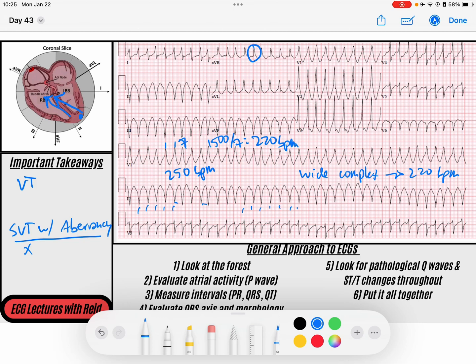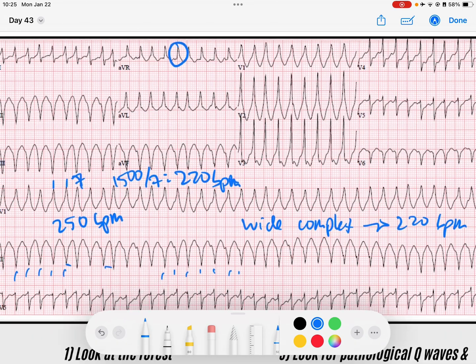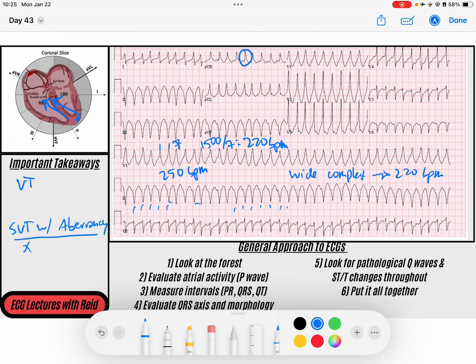Something else that we can do to help determine is this SVT with aberrancy is I look at the QRS morphology. I know that aberrant conduction through the AV node would be like a right bundle branch block or a left bundle branch block. So I look at my lateral leads and maybe V6, V5, 1, and AVL and I don't see things that look like left bundle branch block criteria. And I look through V1 and V2 and I don't see anything that looks like right bundle branch block. I don't see any QRS morphology that closely resembles a right bundle or a left bundle branch. So that's points away from SVT with aberrancy.